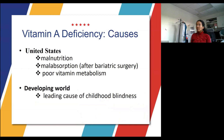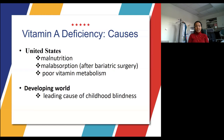Why does vitamin A deficiency happen? In the United States, it's typically because of malnutrition — not getting adequate doses of vitamin A — or malabsorption, which can happen after bariatric surgery, or from poor vitamin metabolism. In the developing world, vitamin A deficiency is actually the leading cause of childhood blindness.